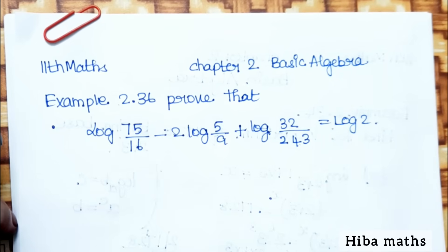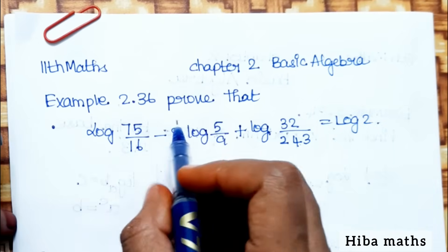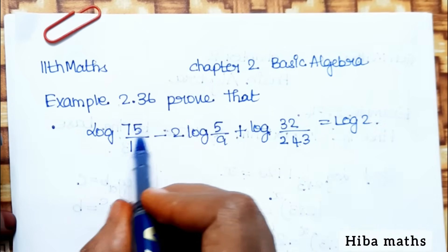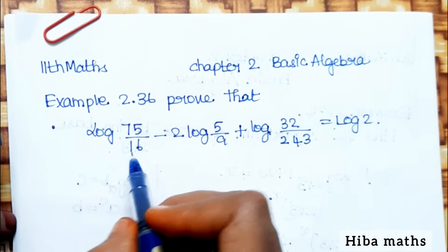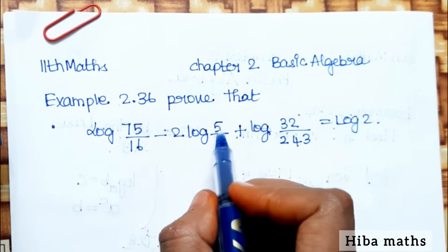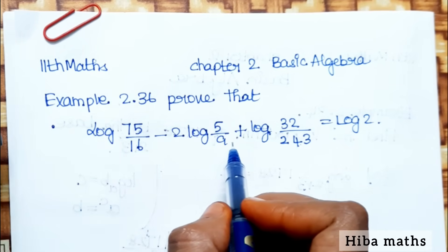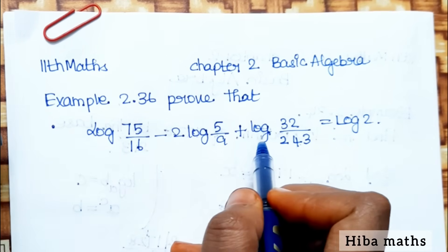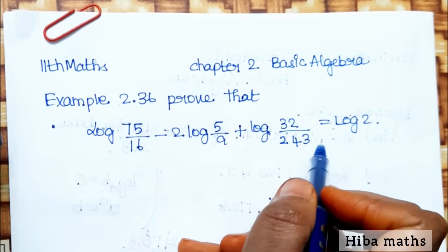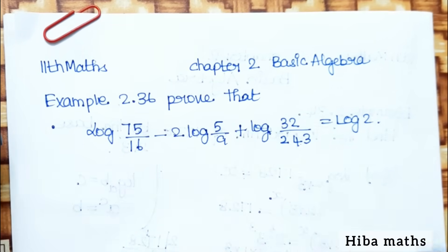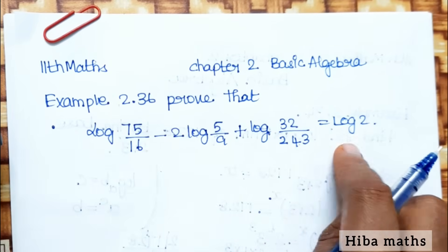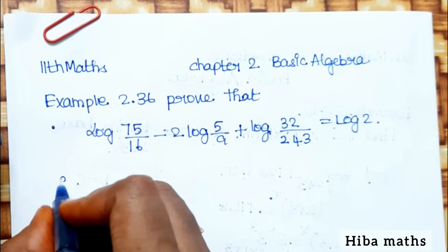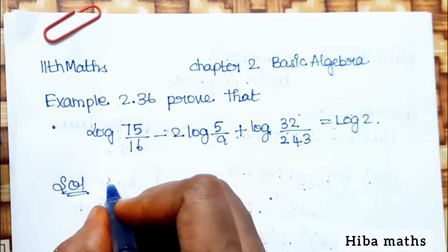Hello students, welcome to Hiba Max 11 Standard, Chapter 2 Basic Algebra, Example 2.36. Prove that log(75/16) minus 2·log(5/9) plus log(32/243) is equal to log 2.